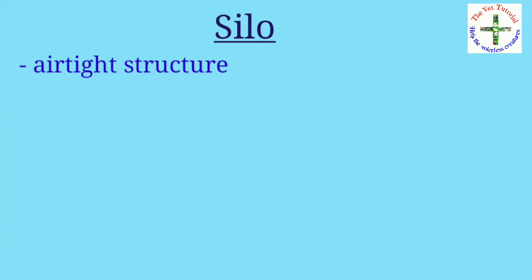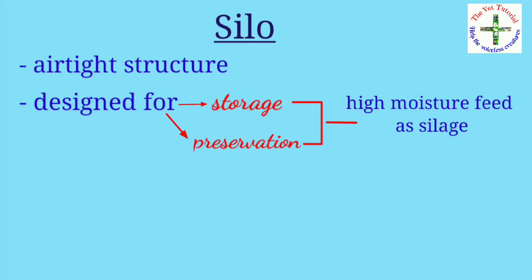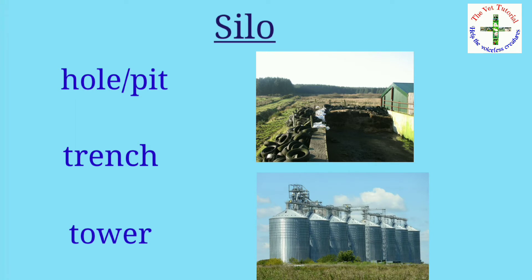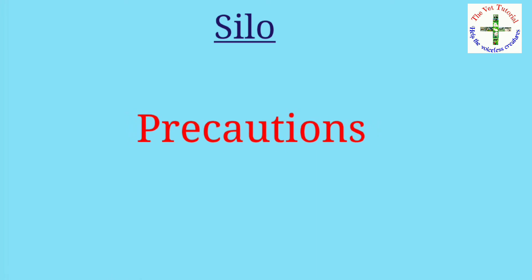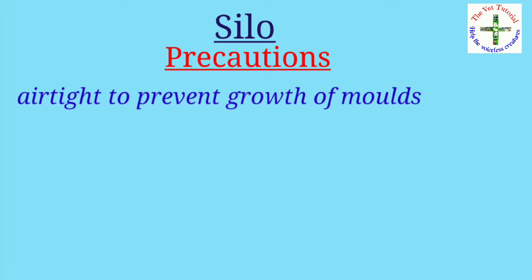A silo is an airtight structure designed for the storage and preservation of high-moisture feed as silage. It is a hole or pit in the ground, trench, or tower where green fodder is stored. While preparing a silo, some precautions should be taken: it should be airtight to prevent growth of molds.